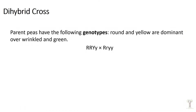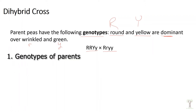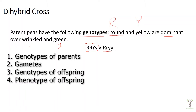Let's suppose we have parent pea plants with given genotypes and we're looking at two traits: round versus wrinkled, and yellow versus green. Round is dominant and yellow is dominant, so wrinkled is recessive (small r) and green is recessive (small y). We follow the same steps as for monohybrid crosses: identify the genotypes of the parents, figure out the gametes the parents can produce, and then determine the genotype and phenotype of the offspring.